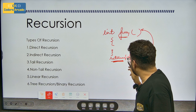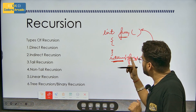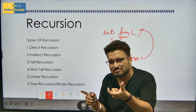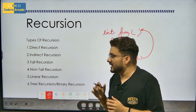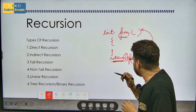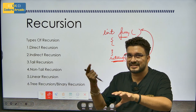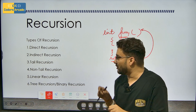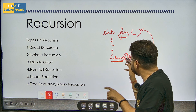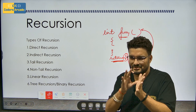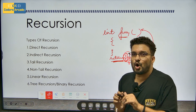Now non-tail recursion: if I add something like '1 plus' before the function call in the return statement, it becomes non-tail recursion. The definition of tail recursion is that the last thing you return is the function itself. But non-tail recursion means you are returning that function while also adding, subtracting, multiplying, or dividing it with something else — the last operation is a calculation. That is known as non-tail recursion.